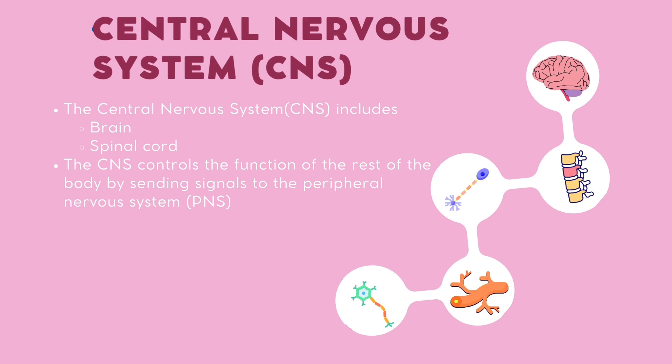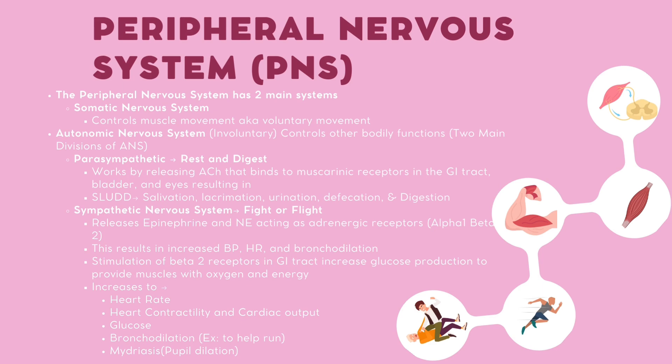The peripheral nervous system, or PNS, has two main systems: the somatic nervous system, which controls muscle movement — that is, voluntary movement — and the autonomic nervous system, which controls other bodily functions. This is further divided into subsystems.